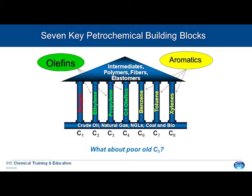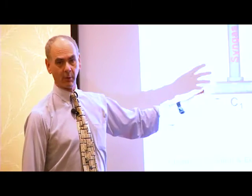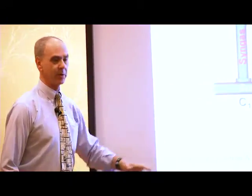Then we have the so-called olefins. Ethylene is the biggest of the building blocks — two carbons. Propylene, three carbons. And then we have actually four C4 olefins, with butadiene perhaps being the most valuable.